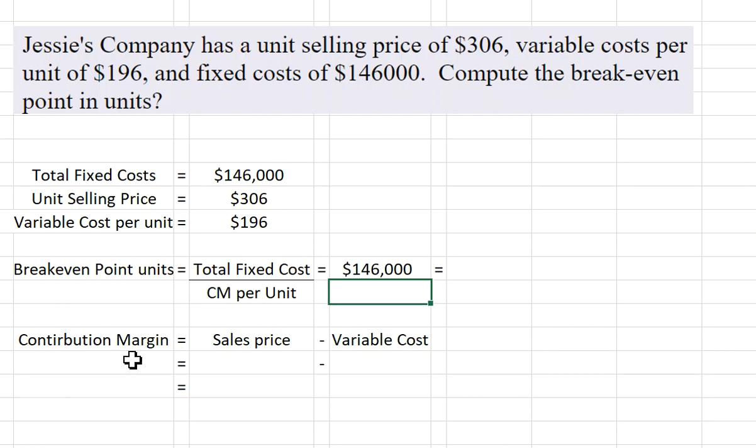So contribution margin as you may recall is just the sales price minus our variable cost per unit. So our sales price is $306, variable cost per unit is $196. That means that my contribution margin is $306 less $196, the variable cost.